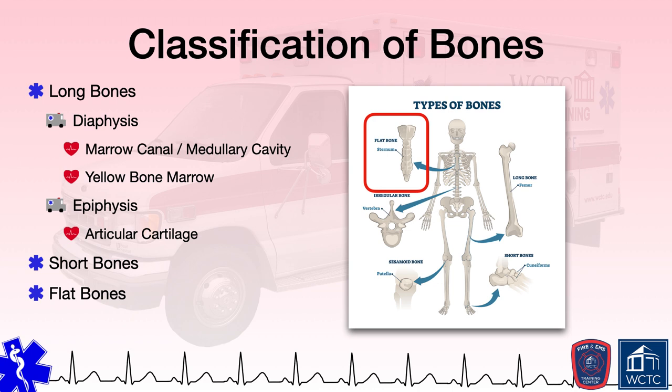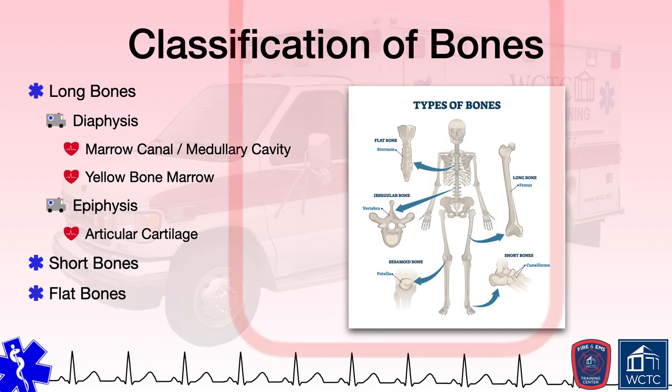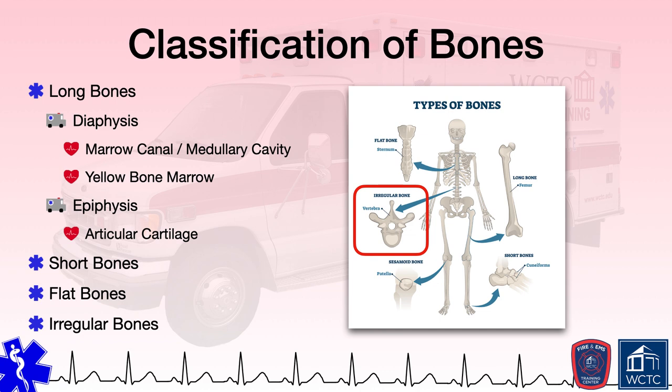Flat bones consist of spongy bone—referred to as diploë—encased within compact bone on both sides, like a sandwich. This structure provides a margin of safety in that if the exterior portion of the bone breaks, the interior spongy bone can absorb some force and, hopefully, the interior compact bone adjacent to the organ it is protecting remains intact. Irregular bones do not easily fit into the previous categories, as they have unique shapes that tend to support specialized functions. Examples include those of the face and sinuses, the mandible, the jaw, the pelvic girdle, and the spinal cord.